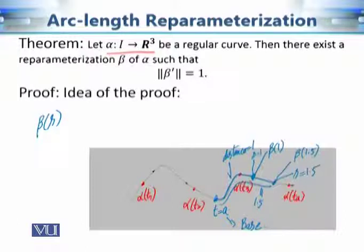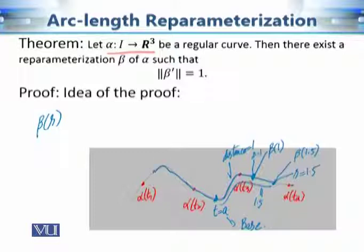Basically, the arc length parameter: when you give the arc length, it gives us the coordinates of the point which is that distance away from the base point. We can also talk about negative distance — there is an arrowhead indicating the direction of motion of alpha. If s is positive we move in the direction of alpha; if s is negative we move in the opposite direction. For example, the point at distance 2 units in the opposite direction corresponds to s = −2, giving beta(−2).